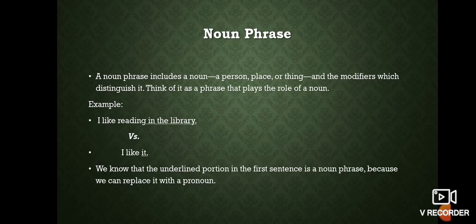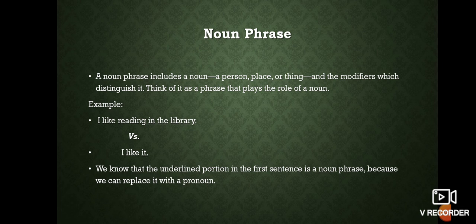The first one is noun phrase. A noun phrase includes a noun — a place, person, or thing — and the modifiers which distinguish it. Think of it as a phrase that plays the role of a noun. In a noun phrase, the principal word is a noun, which can be a name of a person, place, thing, or anything. Along with it there is also a modifier. This collection or group of words acts as a noun in the sentence.